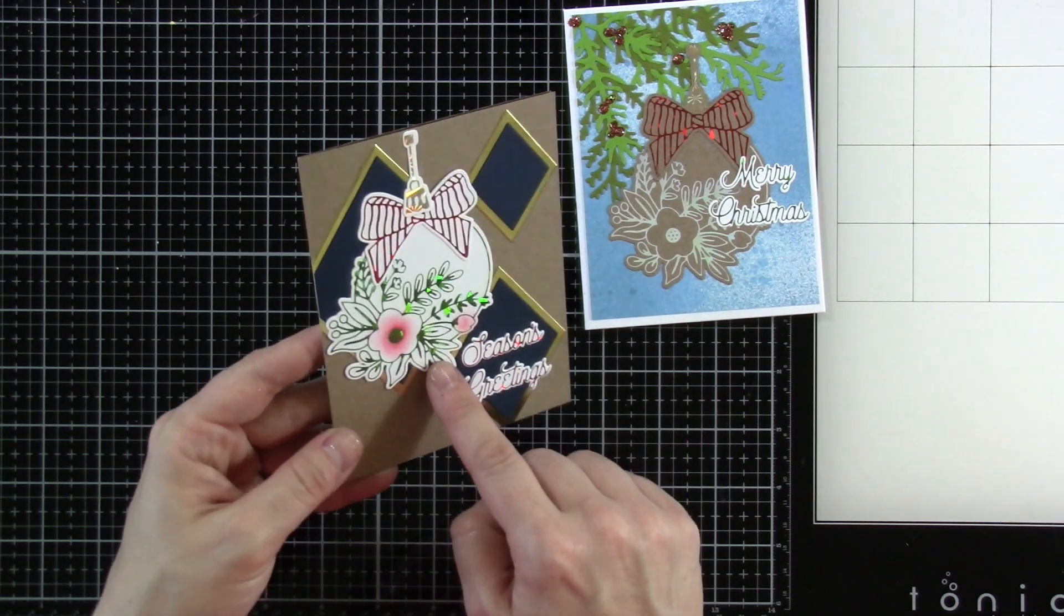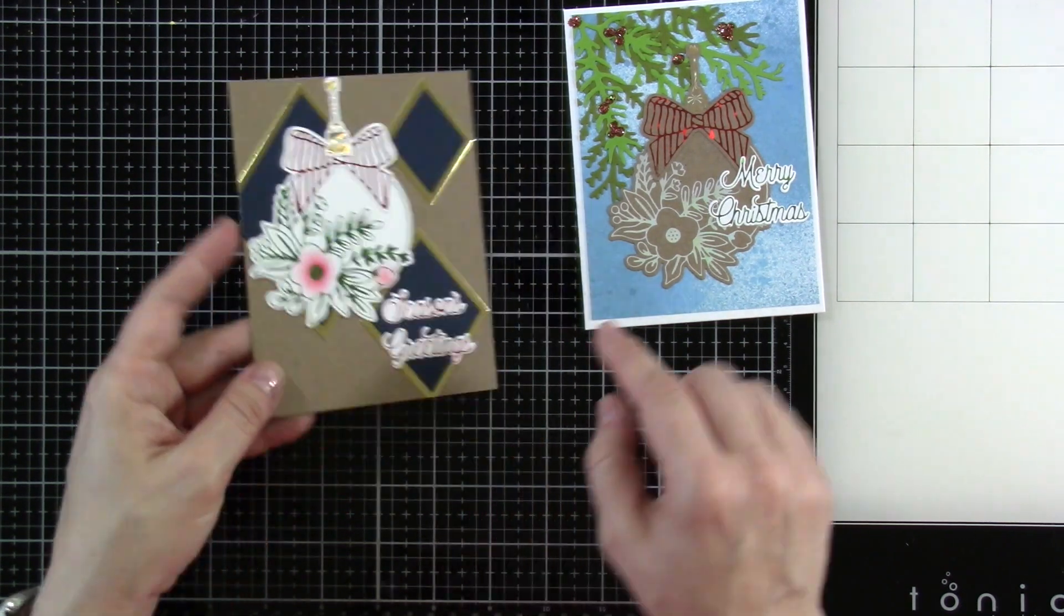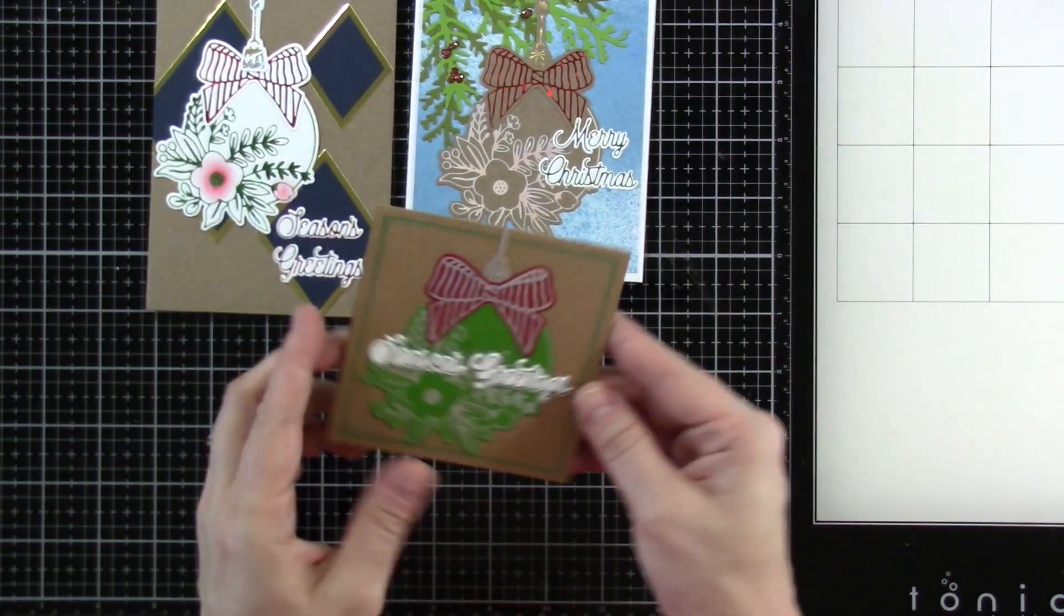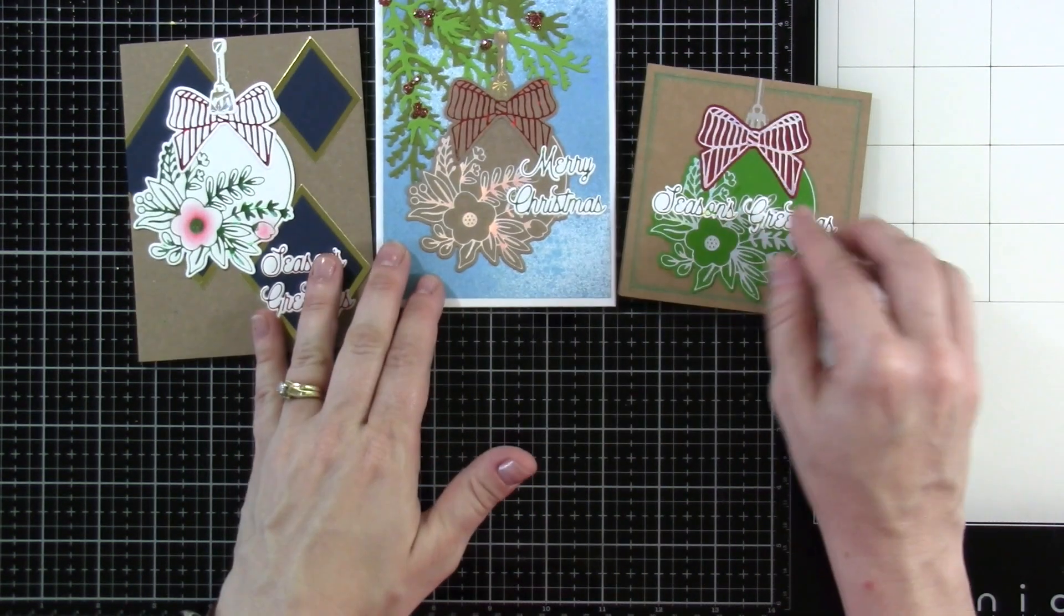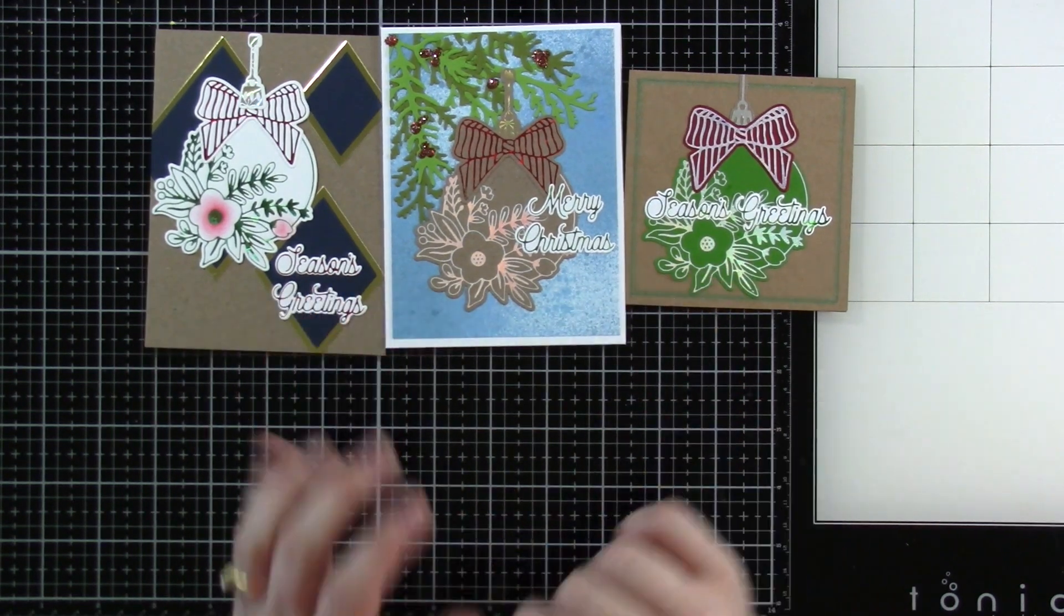And here I did it on white using some of those same colors. And then I also have it on some different colored cardstock using one of these Glimmer Foils. So a lot of great options with that.